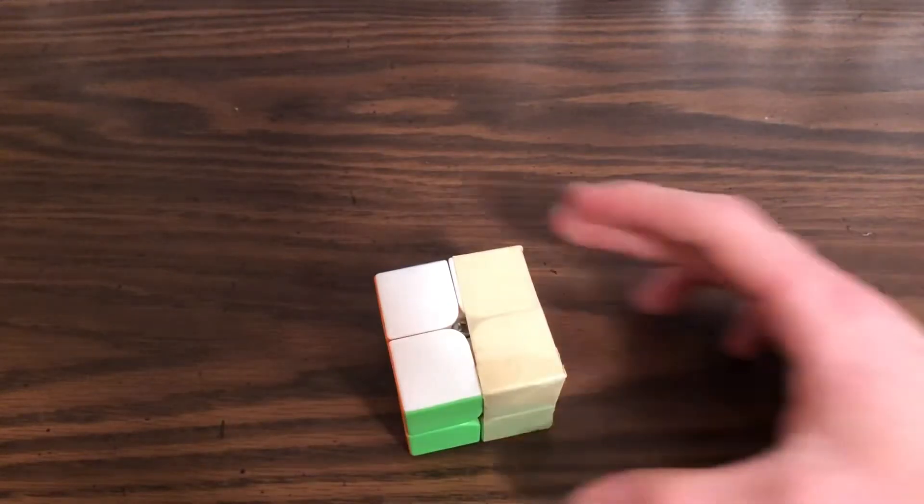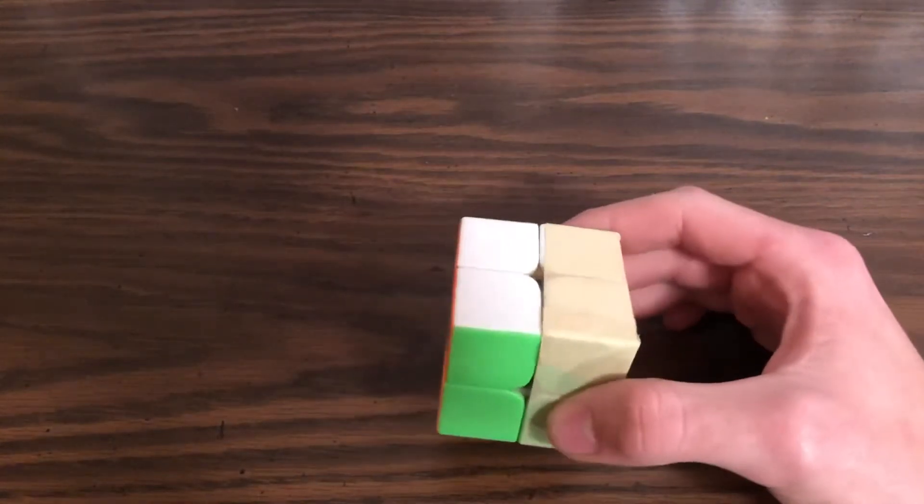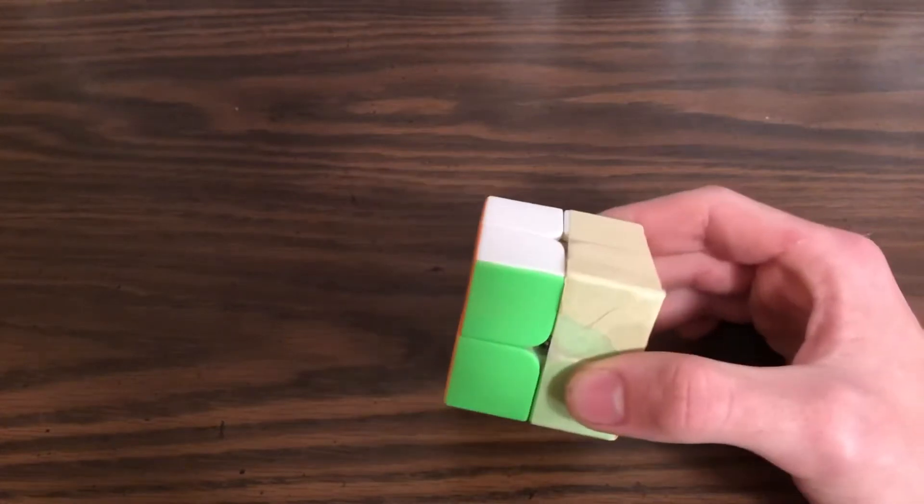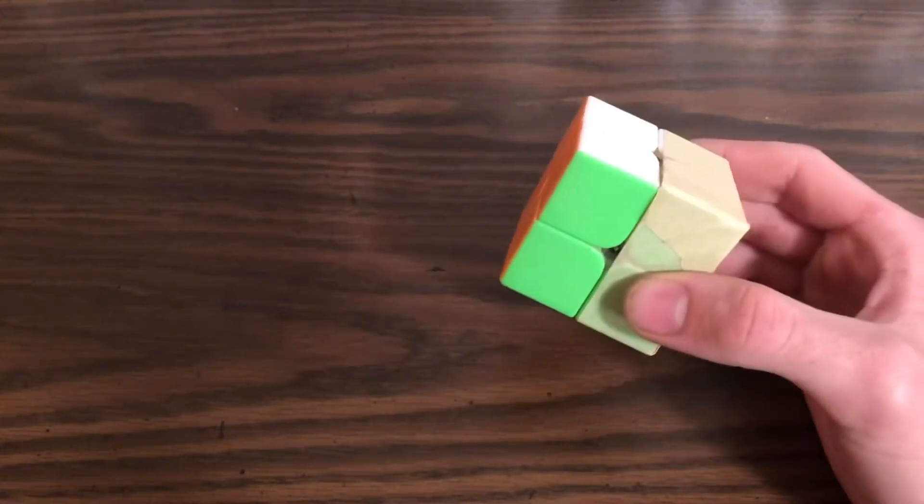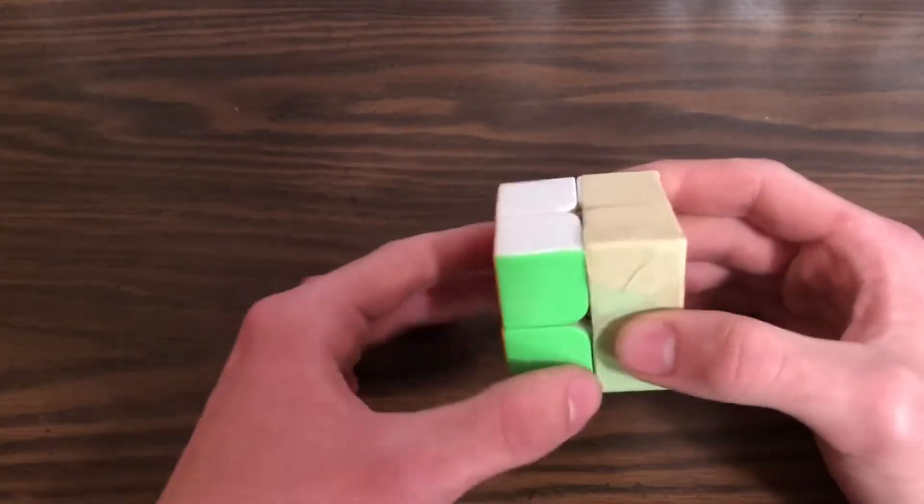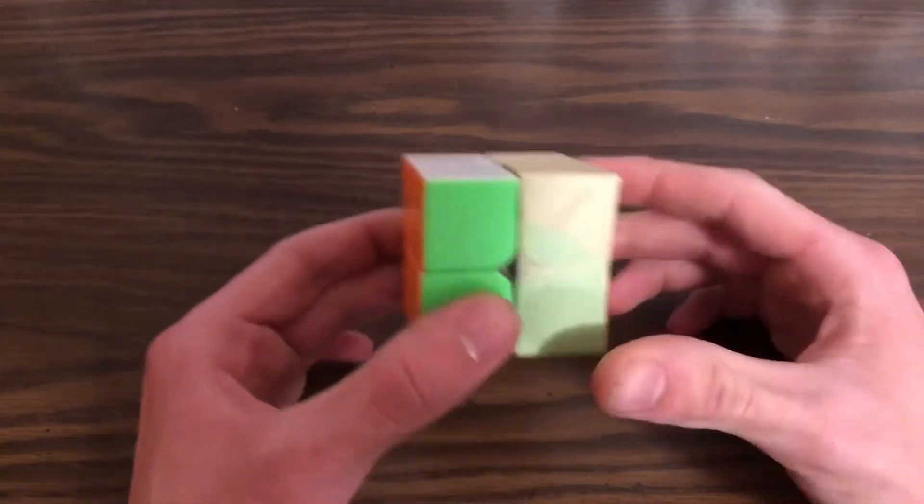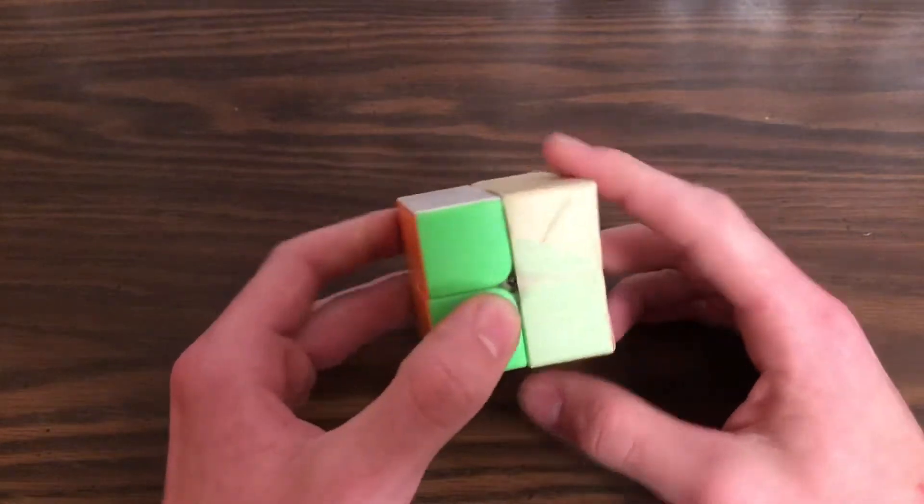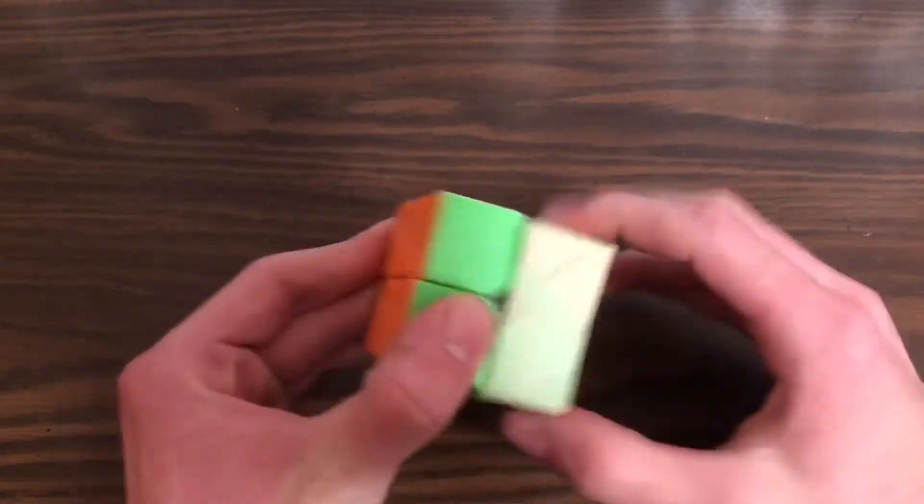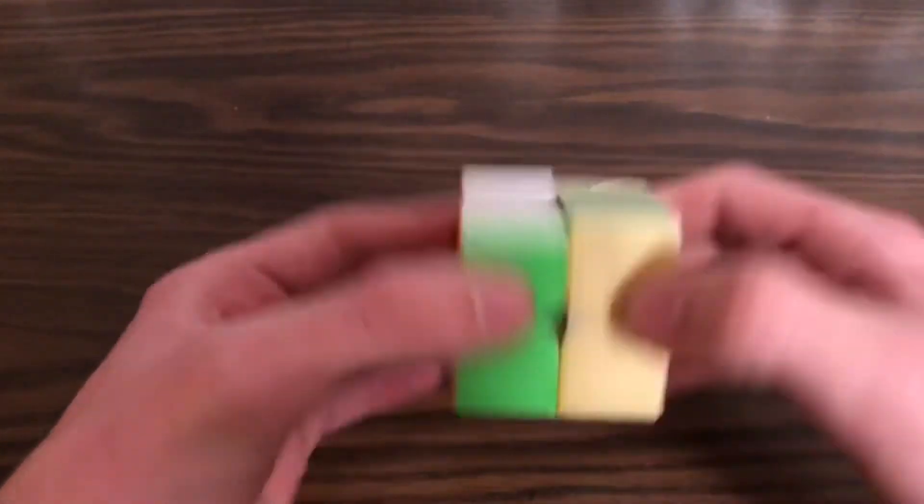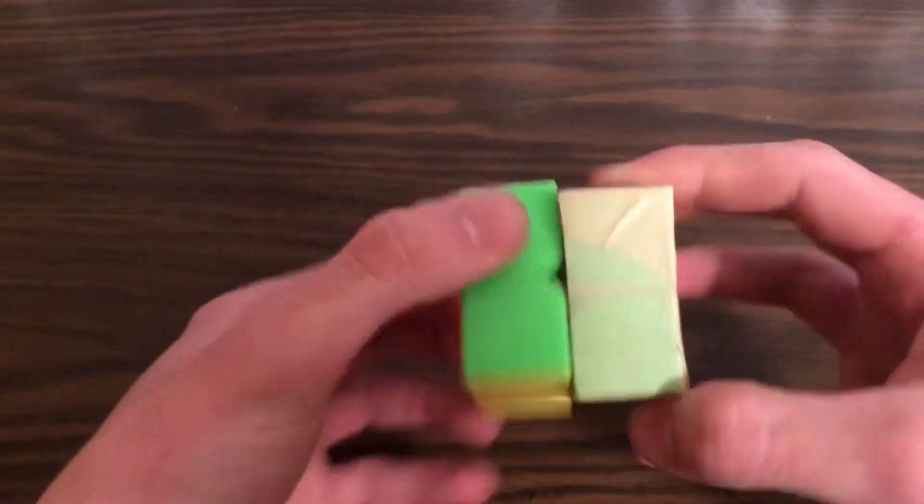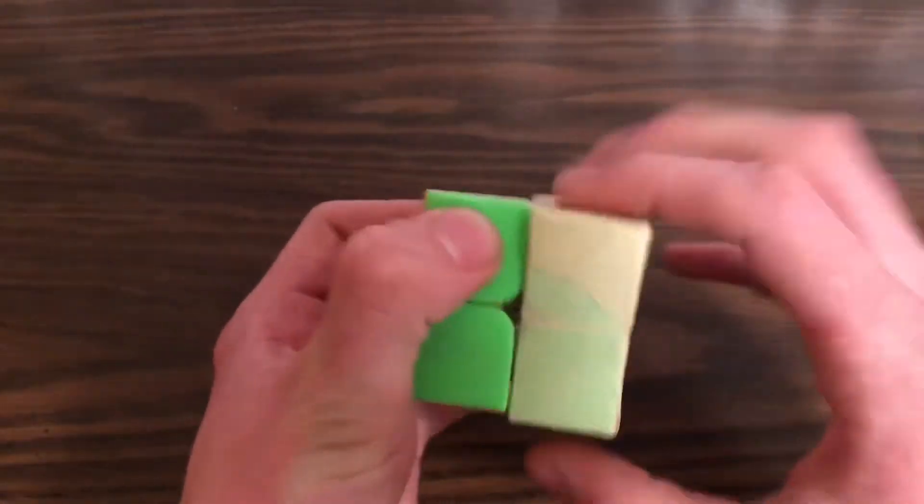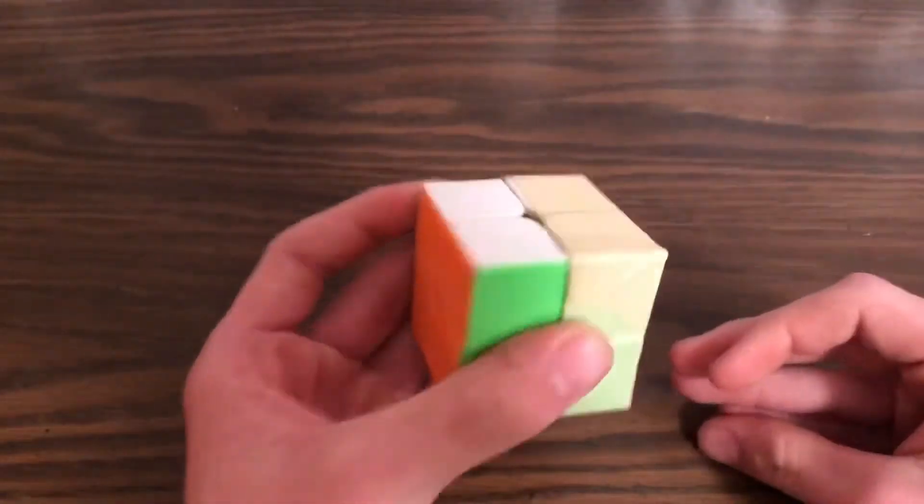When you pick up a normal Rubik's Cube, whether it be anything from 2x2 all the way up to a 19x19 or 33x33 even, the NxN puzzles all have the same basic concept. They are face turning. So no matter what you do, they will always turn on the faces like so. And the same goes for a 3x3 as it does for this 2x2 here.